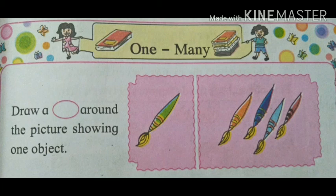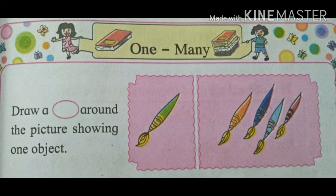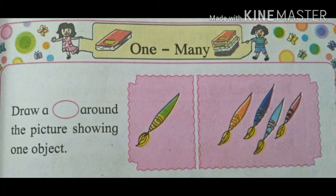So here you can see, in the first picture, there are brushes of painting. The green brush is in one number, so that is one. And next, you can see four brushes — four brushes are many. It means if there is one object, it is one. And if there is more than one object, it is called many. So here is one brush and many brushes — one brush and many brushes.